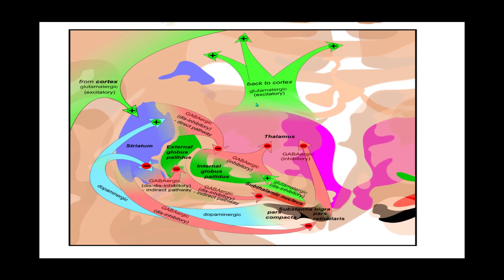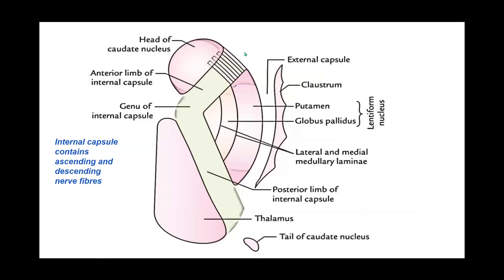This simplified image illustrates the structure of the basal ganglia. We have the head of the caudate nucleus and the thalamus — closely related but not part of the basal ganglia. We have the internal capsule with its anterior limb, genu, and posterior limb — a white matter capsule through which ascending and descending fibers communicate between the cerebral cortex and lower parts of the CNS. We have the globus pallidus and putamen constituting the lentiform nucleus complex, the external capsule, the claustrum, and the extreme capsule. The tail of the caudate nucleus is also visible.